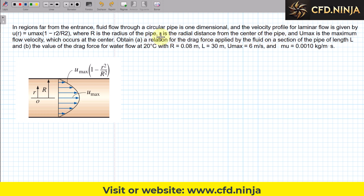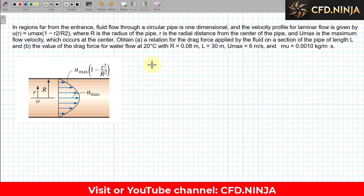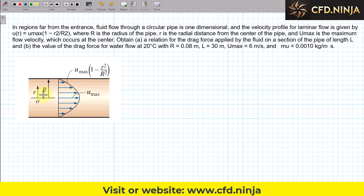What does lowercase r mean? Lowercase r is like a coordinate. If you had Cartesian coordinates you would have x, y, and z — they do not mean a distance, they simply mean they are coordinates. Lowercase r is exactly that: a coordinate in a radial system. So do not confuse lowercase r with capital R.